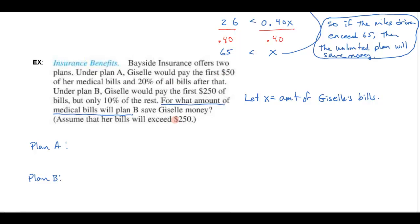We're assuming down here that the bills are going to exceed $250. So she's going to pay the first $50 of her medical bills and then 20% of the bills after that. So plan A is going to cost her, if there's over $250, it's certainly going to cost her $50 plus, and we have to read very carefully here, 20% of the bills after that. So it's going to be 20% of not the total amount of Giselle's bill. Let's make that clear up here. This is the total amount. X is the total amount of bills.